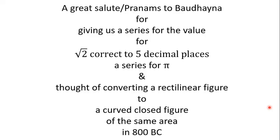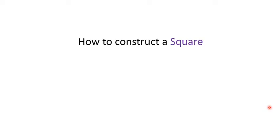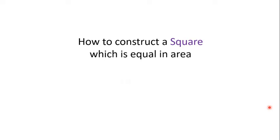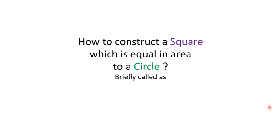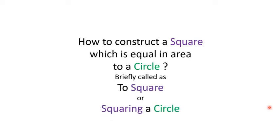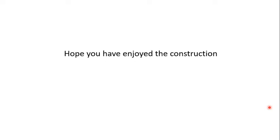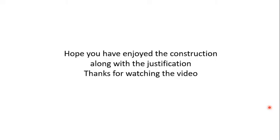Can you think of this now, friends? Is it possible to construct a square which is equal in area to a circle? Can you reverse this process? This is briefly called squaring a circle. I request all of you to think about this method also. Hope you have enjoyed the construction along with the justification. Thanks for watching. Namaste.